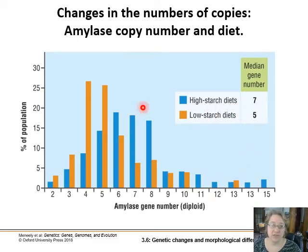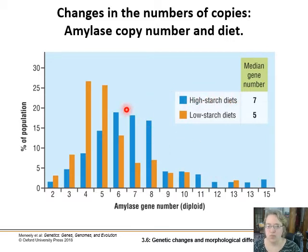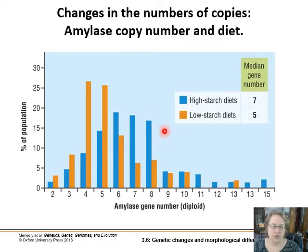We can see this in amylase. Humans have different numbers of copies of amylase in their genome. Amylase is an enzyme that breaks down starch — it cleaves bonds in starch and helps you digest it. Populations that historically have had high starch diets, like rice and potato-based diets, have accumulated more copies of amylase in their genome on average than populations with lower starch diets, maybe higher protein or fat. So we can see the usefulness of accruing more copies of that enzyme depending on the diet in your region.